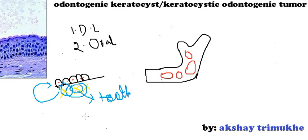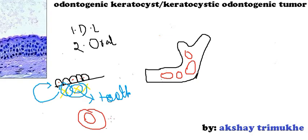When the tumor is smaller in size, it will not create any problem and is generally asymptomatic. But when this tumor grows in size, it can lead to expansion of the cortices, tooth displacement, paresthesia due to compression on the nerves, and pain in the associated region. So this was about the clinical features.